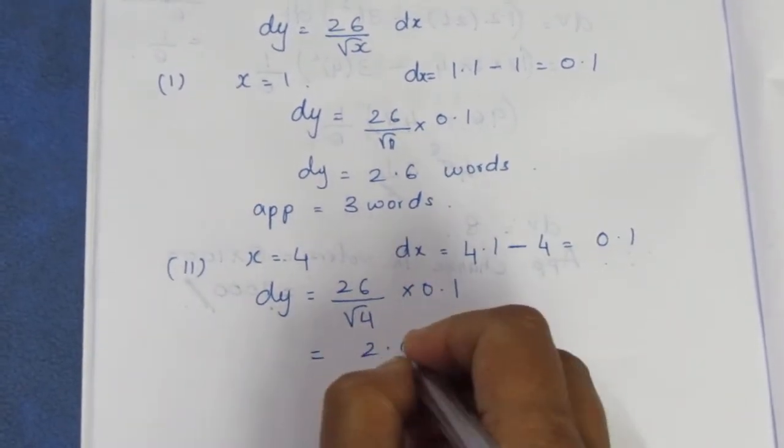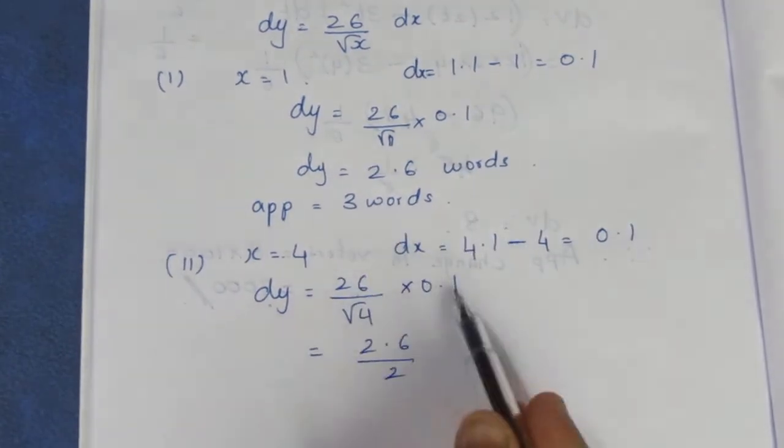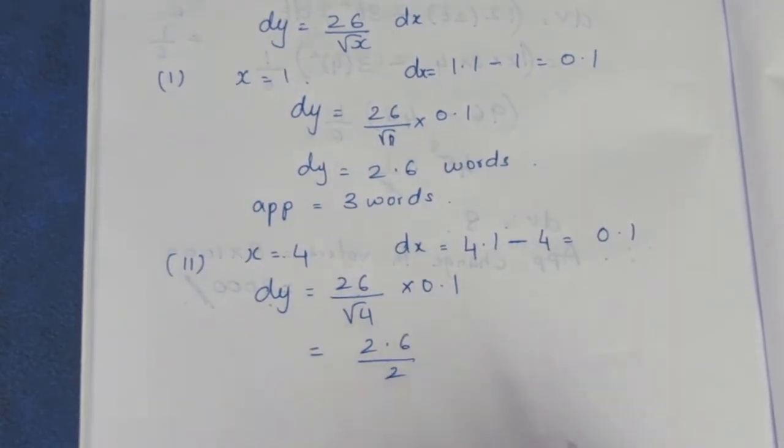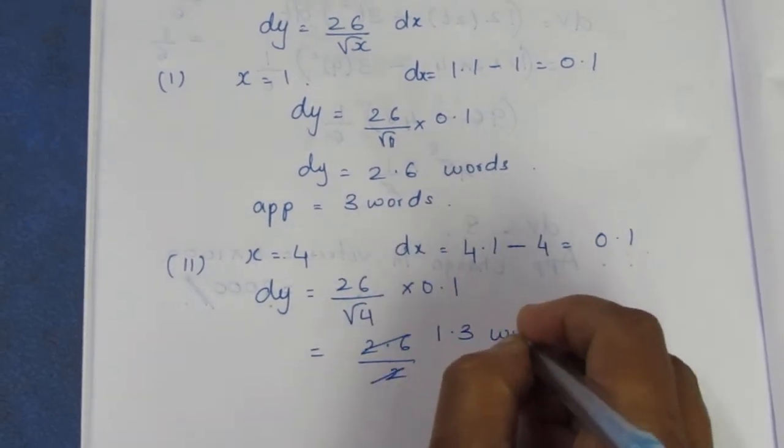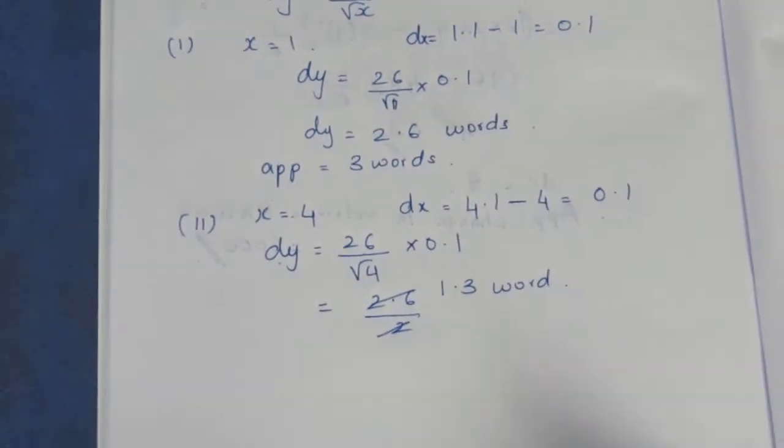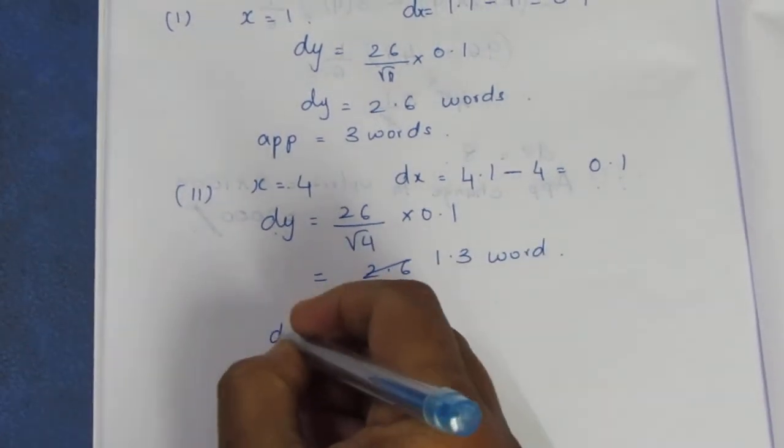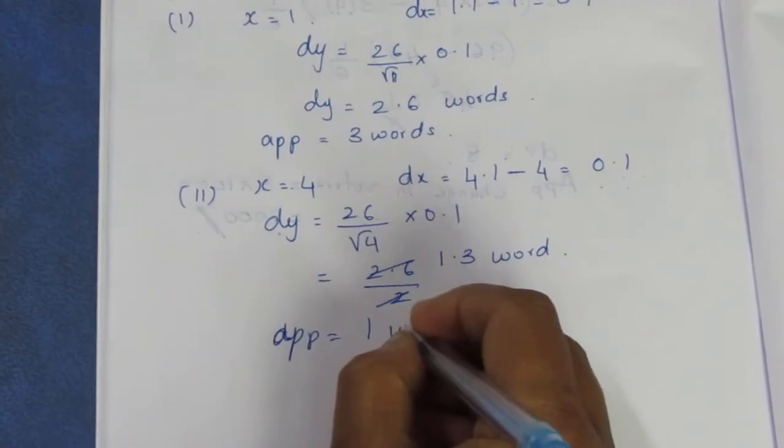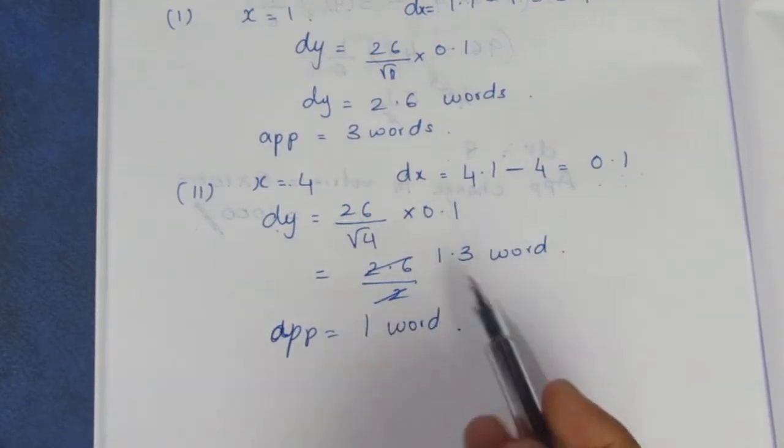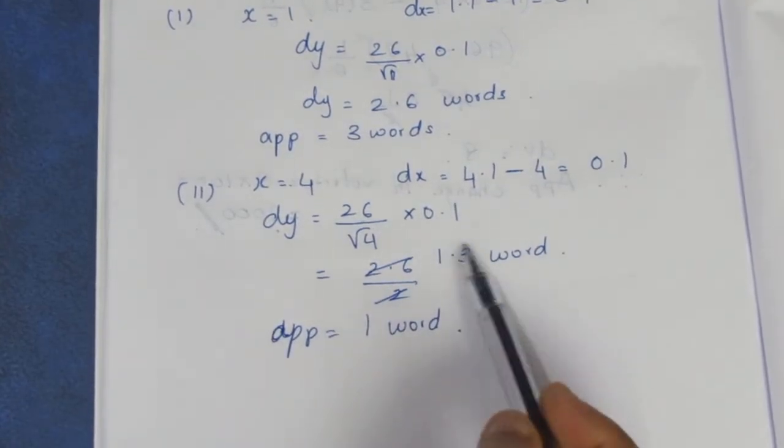dy = 26/2 × 0.1 = 1.3 words. Rounding off, dy is approximately 1 word.